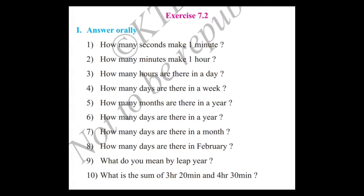How many days are there in a year? There are 365 days in a year. How many days are there in a month? 30 or 31 days are there in a month. How many days are there in February? There are 28 days in February. What do you mean by leap year? Every 4 years, there are 29 days in February — that is called a leap year.